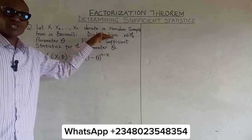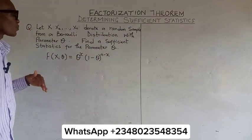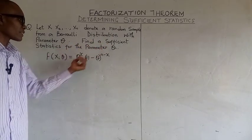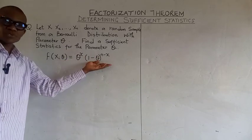Here we have the binary distribution. So we need to find the sufficient statistics for the parameter theta. This is the distribution.